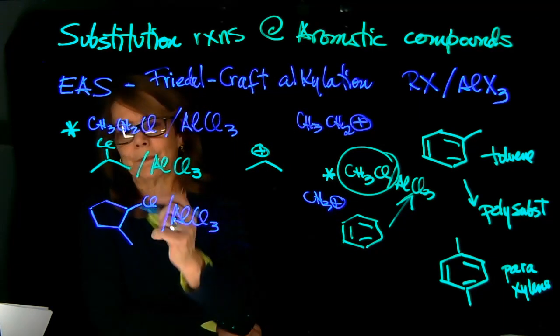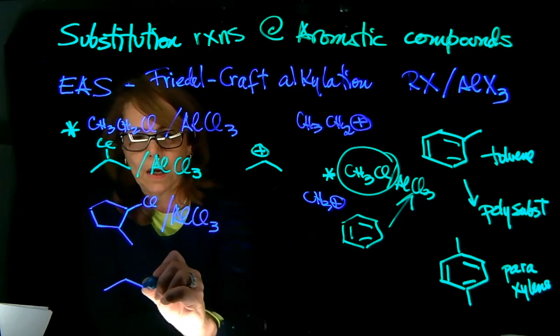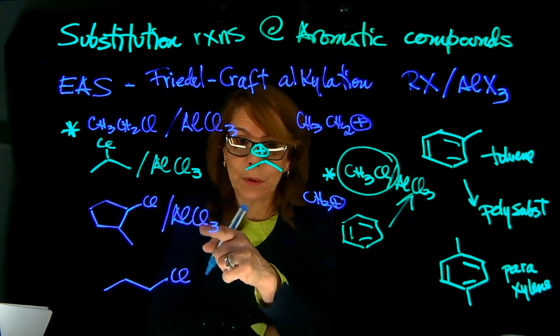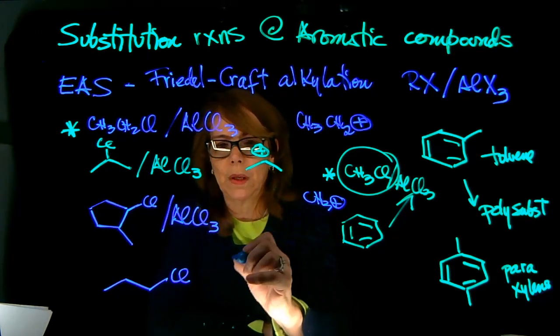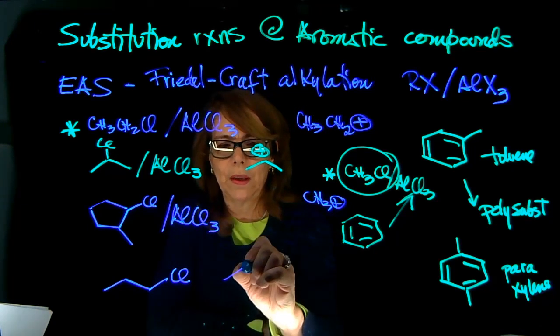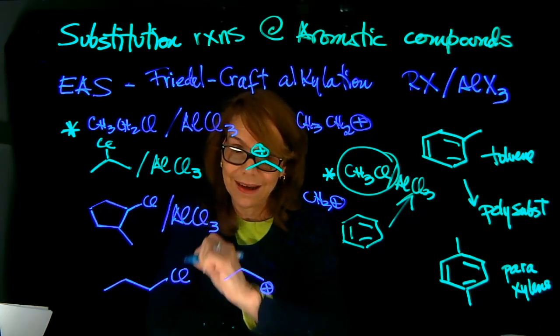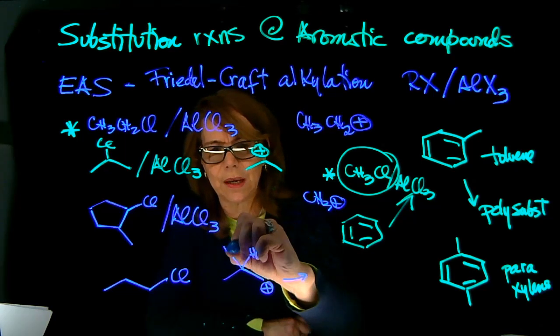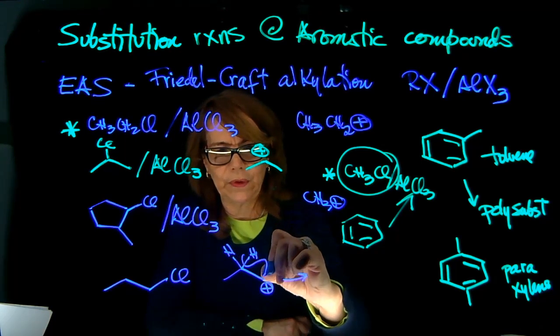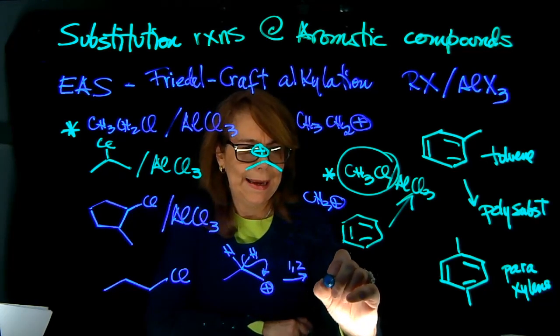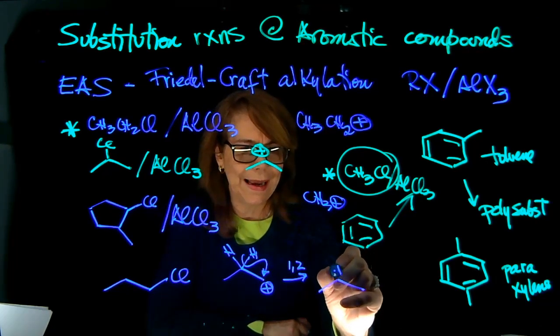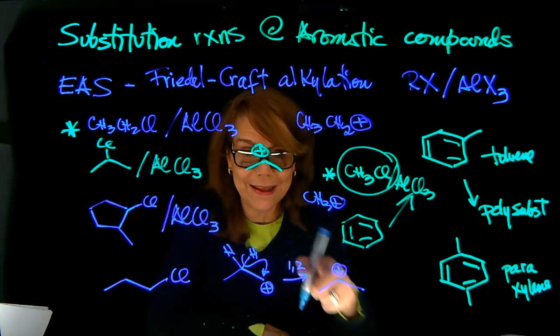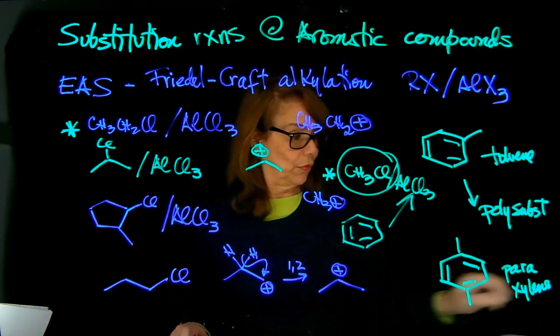But what if I use propyl chloride? If I use propyl chloride in the presence of the aluminum trichloride, that's your carbocation. But that carbocation will rearrange. Remember that here you have H's, you will produce a 1-2 hydride shift, and you're going to make the isopropyl cation, and that is going to act as the electrophile.